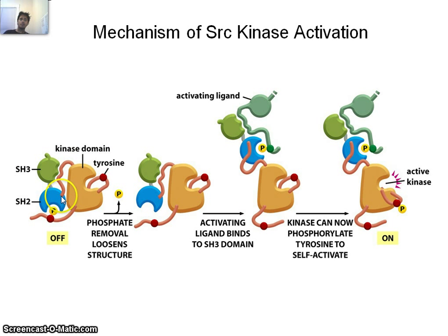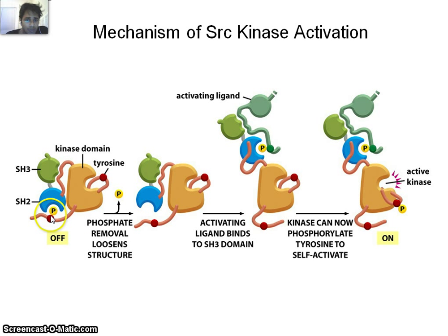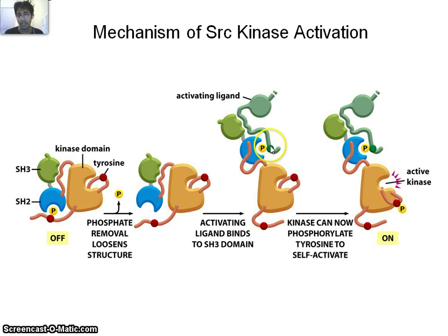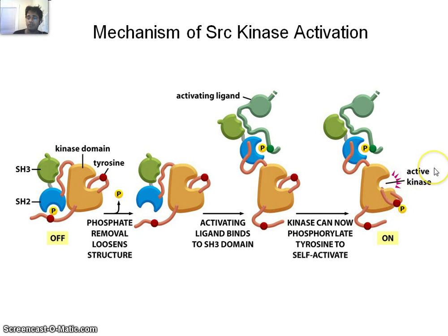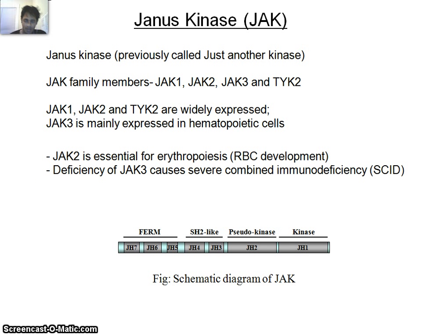Here is the classical example of Src kinase activation. Src has an SH2 domain, SH3 domain, and a tyrosine kinase domain. The phosphorylated form of Src is actually inactive. When this phosphate group is removed, Src becomes activated and the structure becomes slightly loose. The SH2 domain can then bind to the activating ligand's phosphate group, and the SH3 domain binds to the PXXP proline-rich motif. Upon binding, Src becomes activated and phosphorylated.